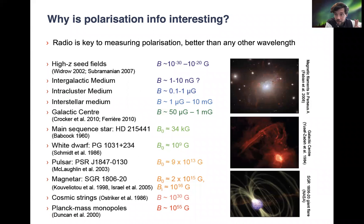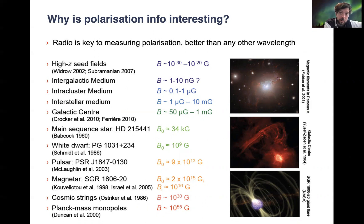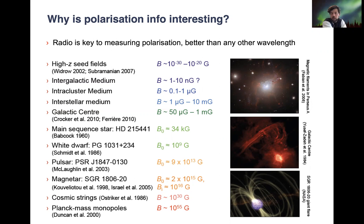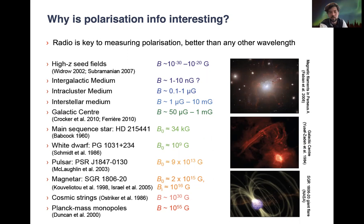So why is polarization so interesting? Radio in particular is key for measuring polarization better than any other wavelength essentially, because of the way we can store phase and understand how phase works. In particular, polarization is a great tracer of magnetic fields. Magnetic fields span everything in the universe and play a fundamental role. As we know from radio astronomy, emission largely from AGN is because electrons are spiraling in a magnetic field. So polarization really gives a lot of constraints on these traces, particularly if you understand the emission mechanism.